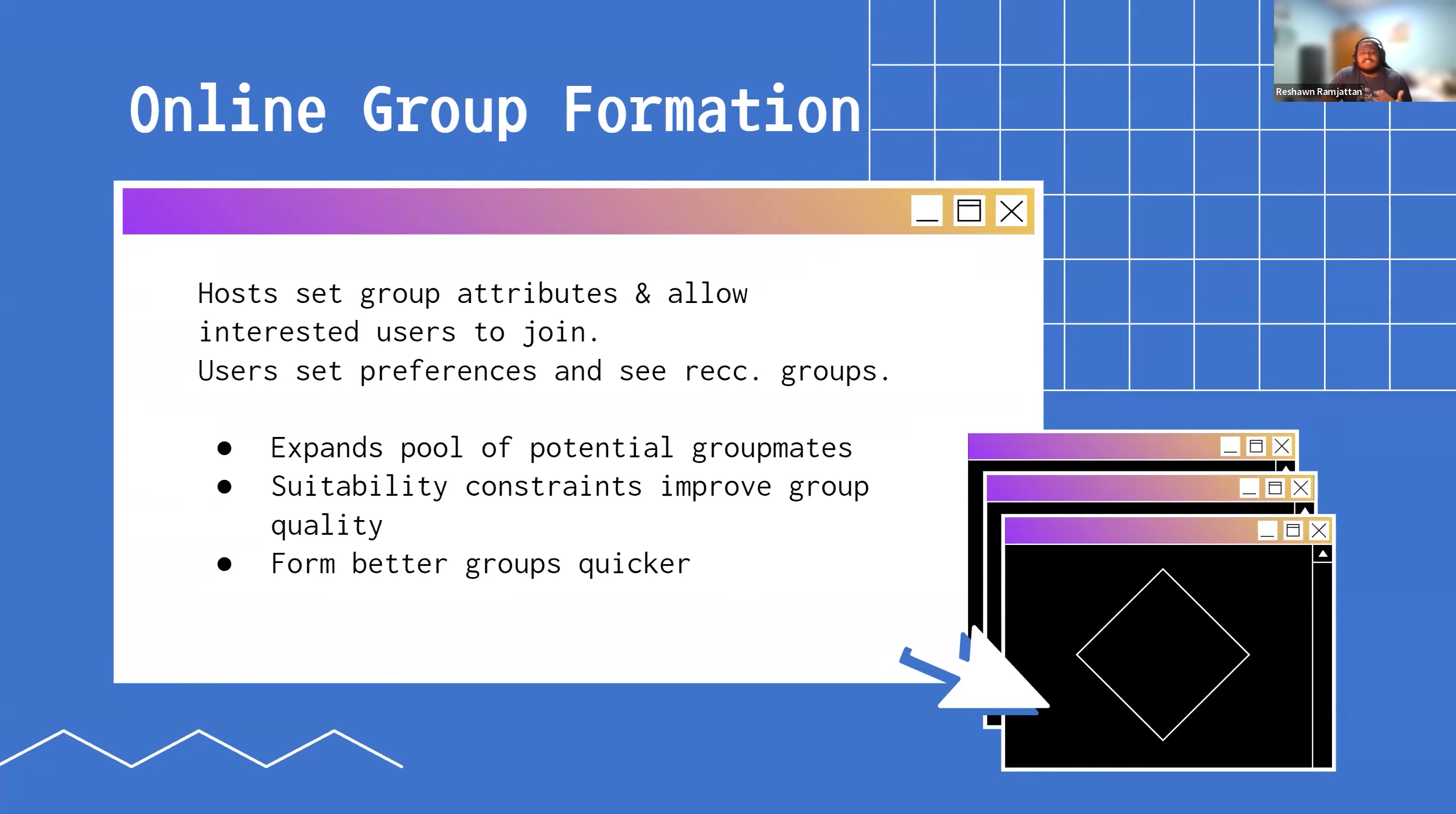On the user side, they can set their preferences what they're looking for, they can then see recommended groups that they can then ask to join. This versus the more traditional normal way of doing things expands the pool of potential people you can draw from, and the suitability constraints we can enforce or optimize for improves the overall quality of the groups and people who are able to join those groups. It's also just overall quicker because you're filtering through an app rather than having to reach out and hope people see the messages.